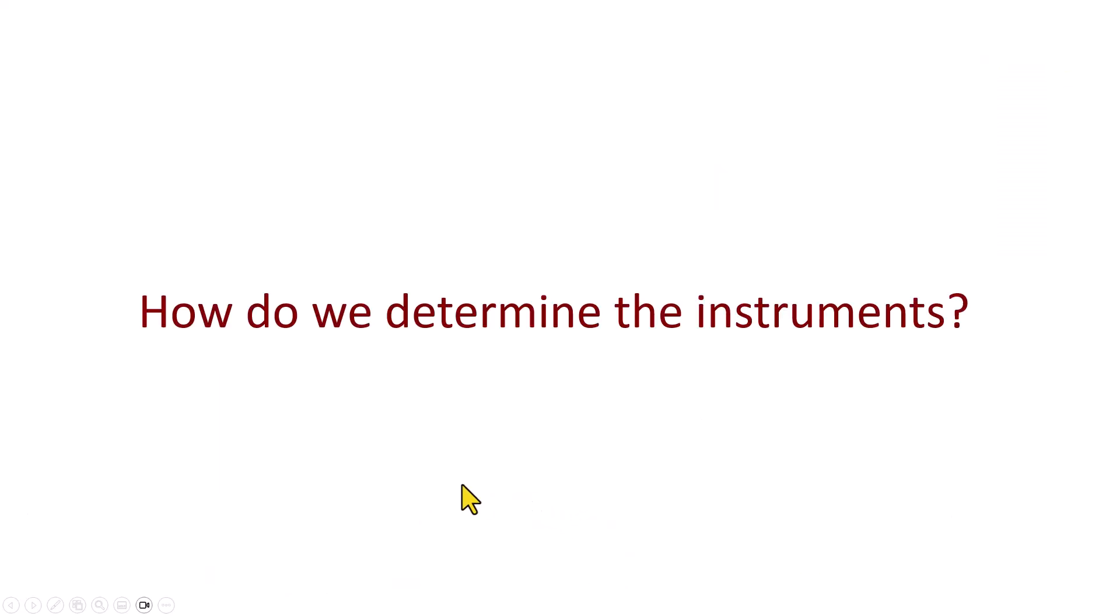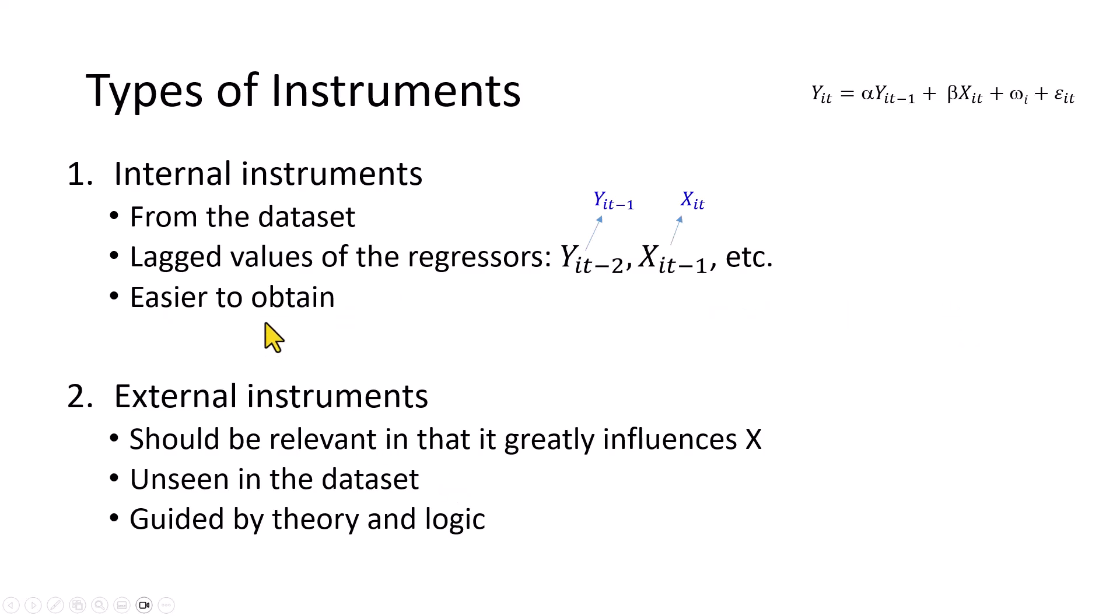So with that, we ask the question, how do we determine the instruments? To be sure, there are two types, internal and external. Internal instruments are generated from the dataset and are essentially the lagged regressors. So for example, the second lag of the dependent variable serves as instrument for the first lag, which is included in the model as a regressor, while the first lag of the explanatory variable serves as instrument for the contemporaneous term.